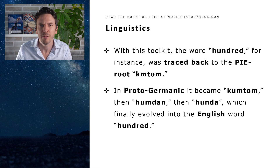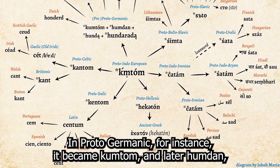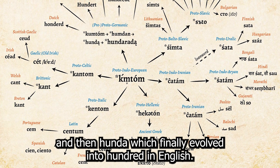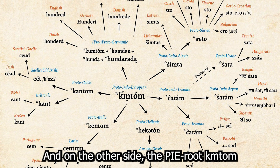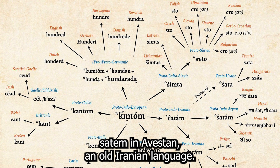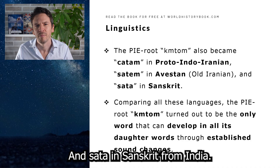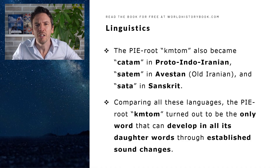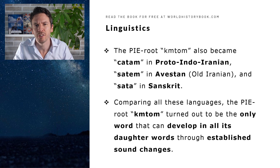With this toolkit, the word hundred, for instance, can be traced back to the PIE root kmtom. In Proto-Germanic it became kumtum, and later hundham, and then hunda, which finally evolved into hundred in English. And on the other side, the PIE root kmtom also became katam in Proto-Indo-Iranian, then satam in Avestan — an old Iranian language — and sata in Sanskrit from India. Comparing all these languages, the PIE root kmtom turned out to be the only word that can develop into all these daughter words through these well-established sound changes.